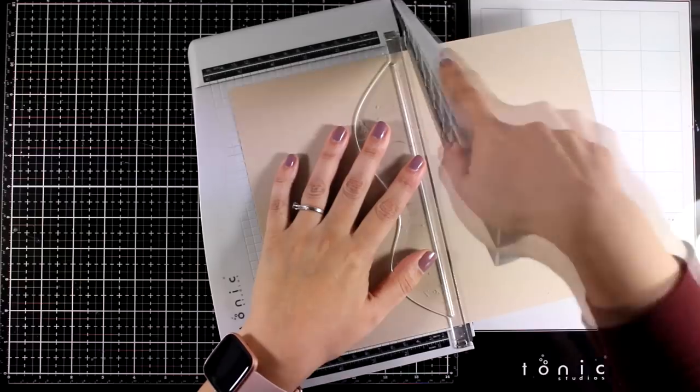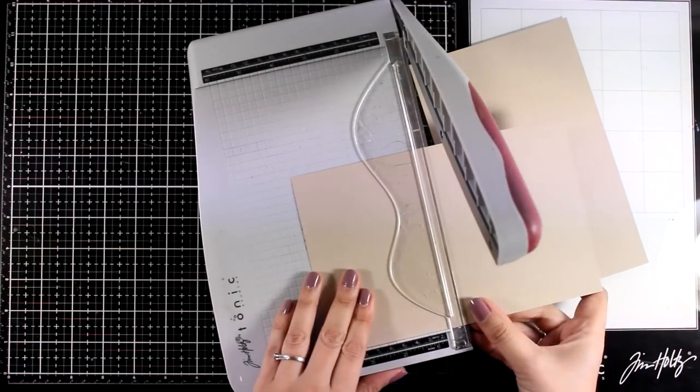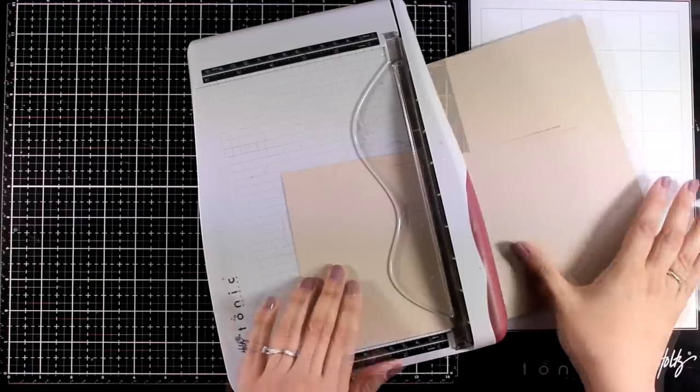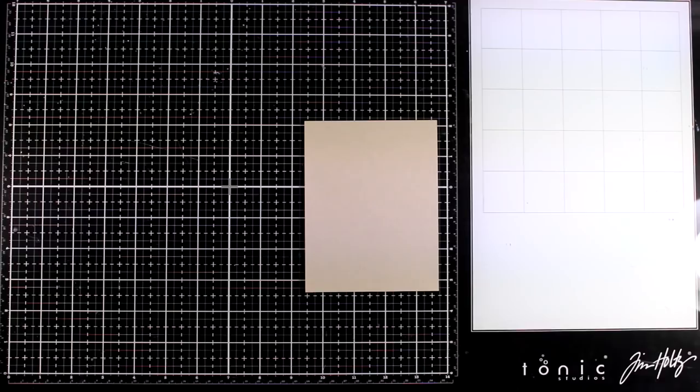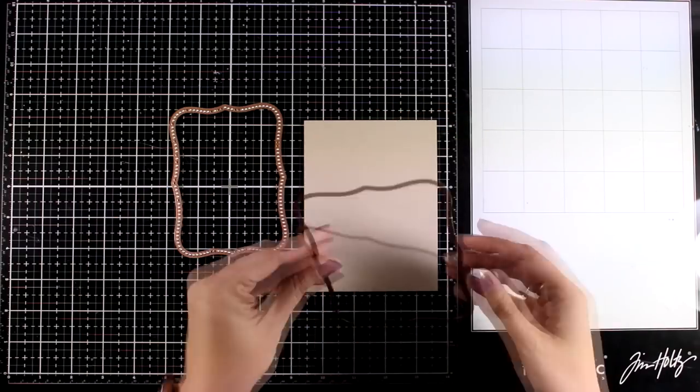I'm starting with Nina Desert Storm cardstock and I'm going to cut it down to be 4.25 by 5.5. That's 80 pounds cardstock and for the layers of a card I always like to go with 80 pounds.